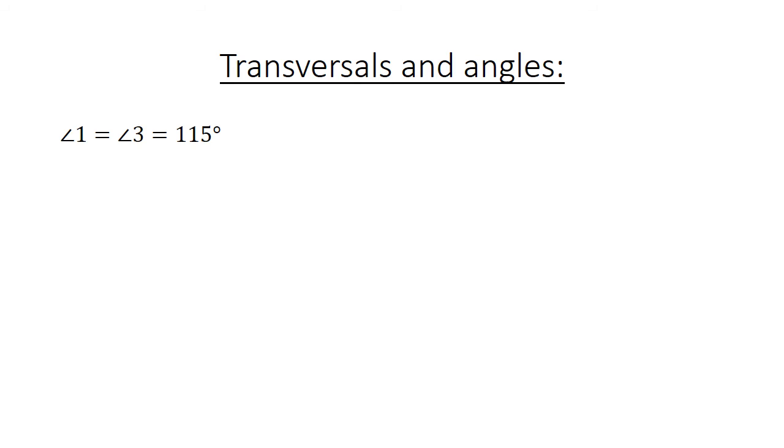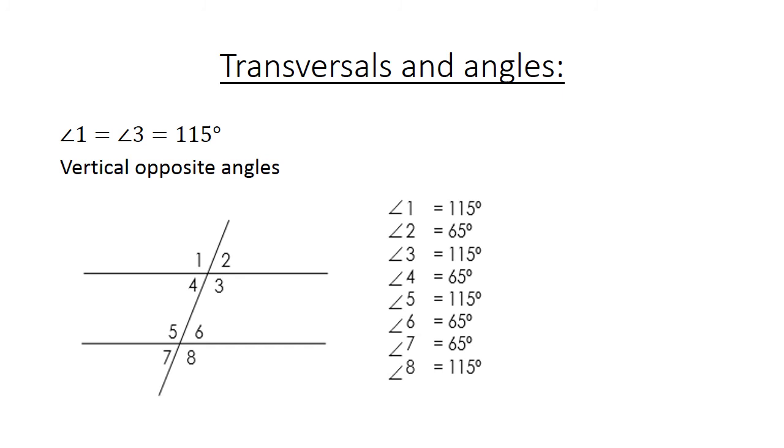Angle 1 equals angle 3 equals 115 degrees, vertically opposite angles. Angle 1 equals angle 5 equals 115 degrees. Corresponding angles.